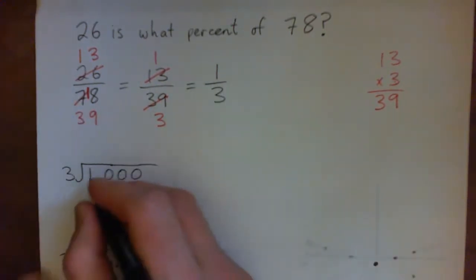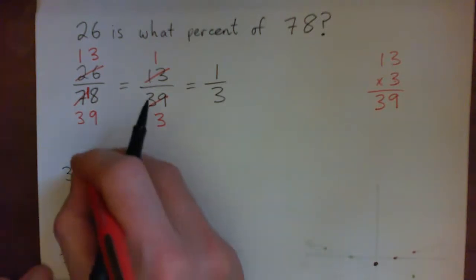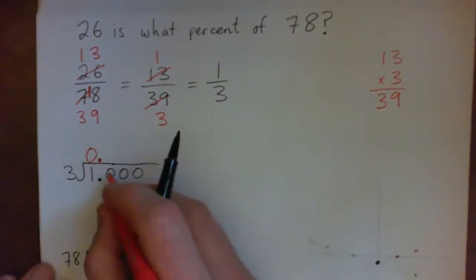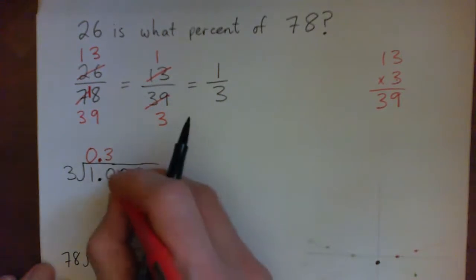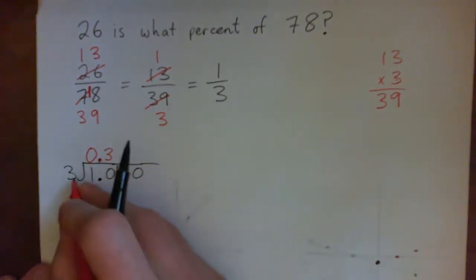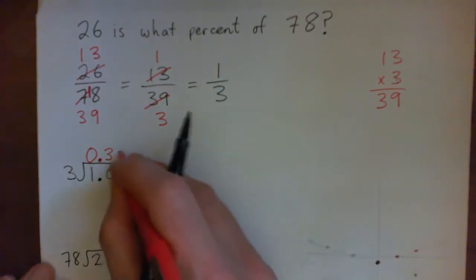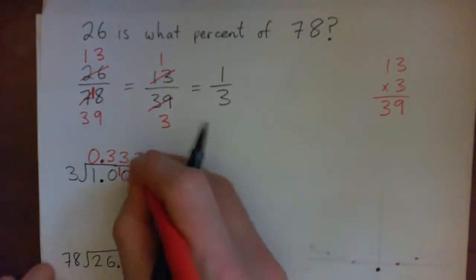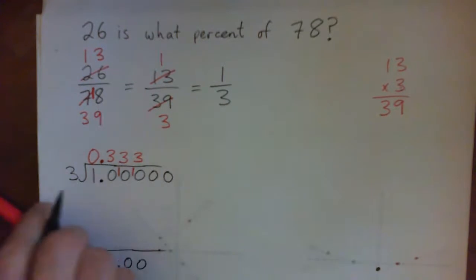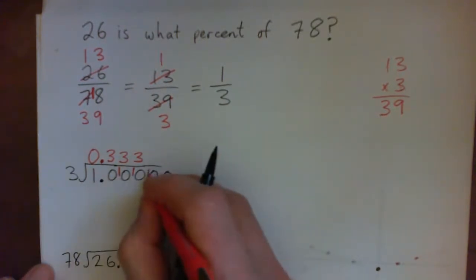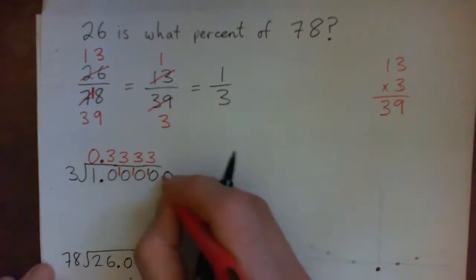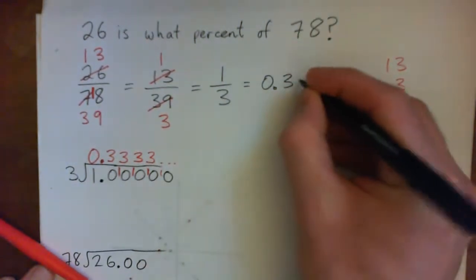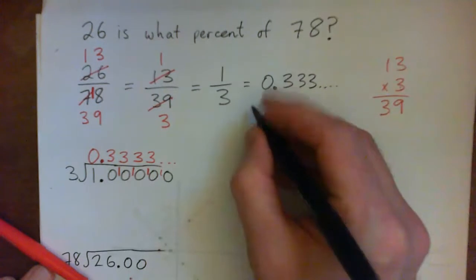So, 3 into 1: 0 times. Bring up the decimal point. 3 into 10 is 3 times, remainder 1. 3 into 10 again is 3 times, remainder 1 — and this keeps repeating. So we get 0.333... on and on forever.